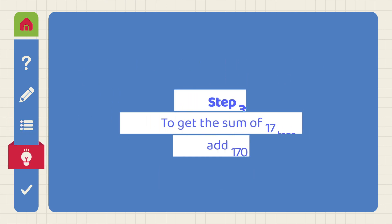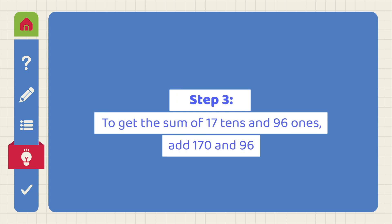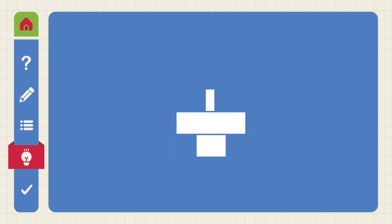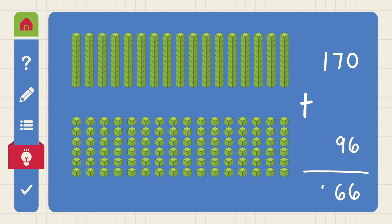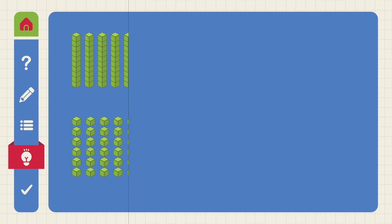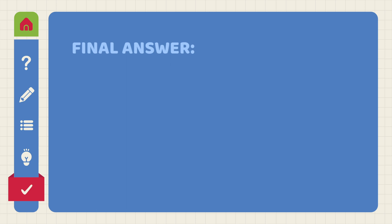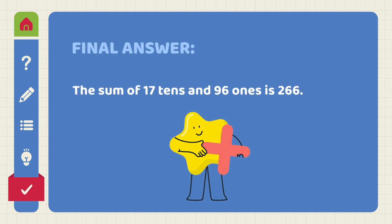Step 3: To get the sum of 17 tens and 96 ones, add 170 and 96. Therefore, the sum of 17 tens and 96 ones is 266.